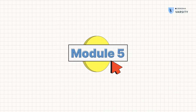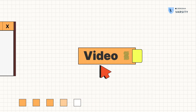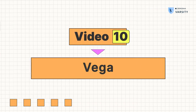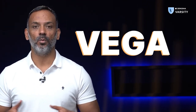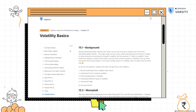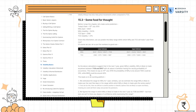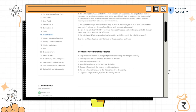Hi, my name is Karthik Rangappa. In this video, let's understand the last option Greek, which is the vega of an option. Before you watch this video, I would strongly suggest that you read the chapters linked in the description to get a sense of what volatility really is. Assuming that you've done that, let me continue.